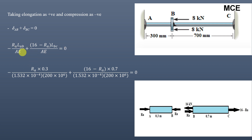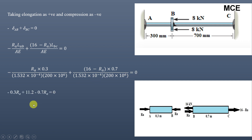Substituting values: −RA × 0.3 / (1.532 × 10⁻⁴ × 200 × 10⁶) + (16 − RA) × 0.7 / (1.532 × 10⁻⁴ × 200 × 10⁶) = 0. Since the denominator is the same for both terms, it cancels out, giving: −0.3 RA + 11.2 − 0.7 RA = 0, where 16 × 0.7 = 11.2. Solving: RA = 11.2 kN. This is the reaction at A.